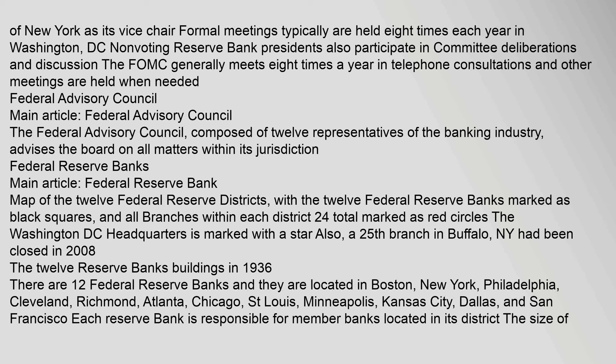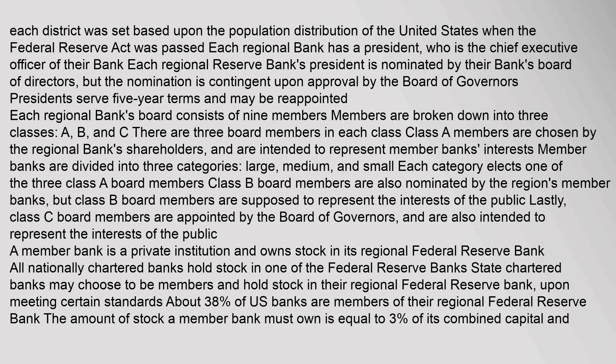Each regional bank has a president who is the chief executive officer of their bank. Each regional reserve bank's president is nominated by their bank's board of directors, but the nomination is contingent upon approval by the Board of Governors. Presidents serve five-year terms and may be reappointed. Each regional bank's board consists of nine members broken down into three classes: A, B, and C. Class A members are chosen by the regional bank's shareholders and represent member banks' interests. Class B board members are nominated by the region's member banks but are supposed to represent the interests of the public. Class C board members are appointed by the Board of Governors and also represent the interests of the public.